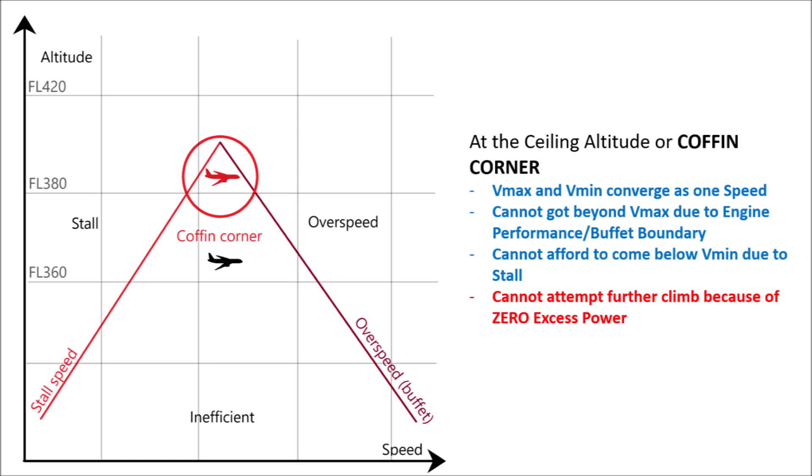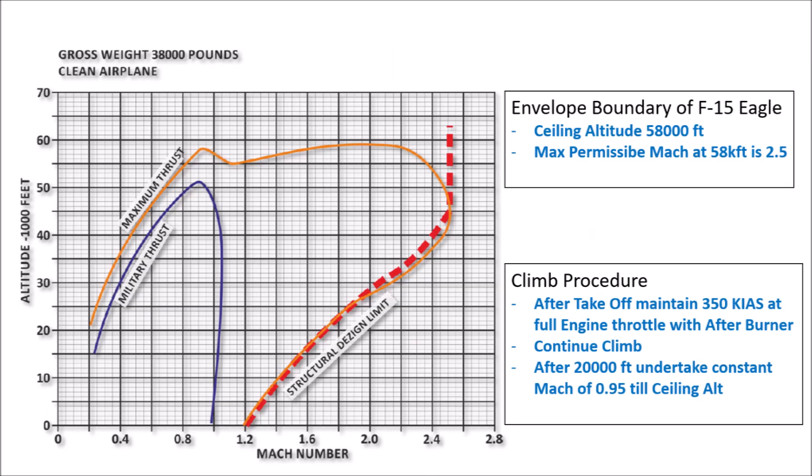At coffin corner, we cannot afford to reduce the speed due to stall, and we don't have enough engine power to increase the speed due to zero excess power available. Therefore, we will not be able to climb any further beyond the ceiling height.